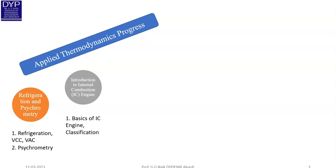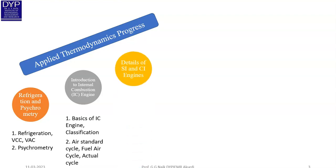In Unit 2, Introduction to IC Engines, the first section covers the basics of IC engines including their classification. The second section covers what is meant by air standard cycle, fuel-air cycle, actual air cycle, and their comparison.